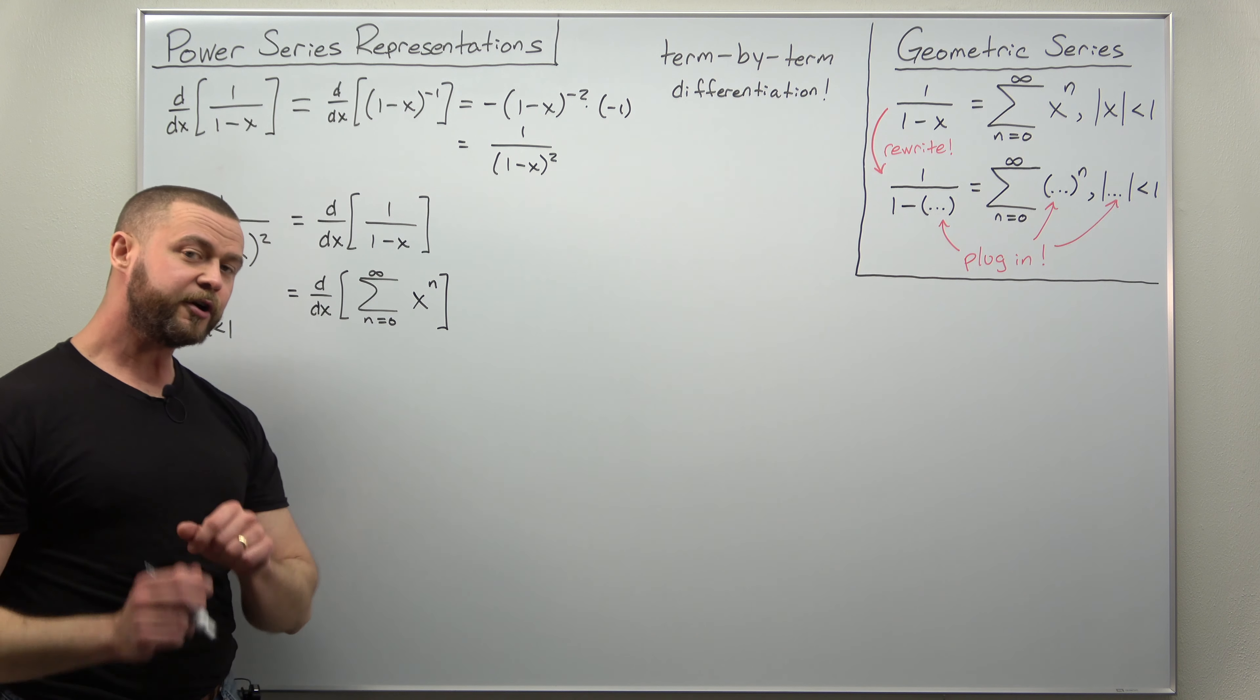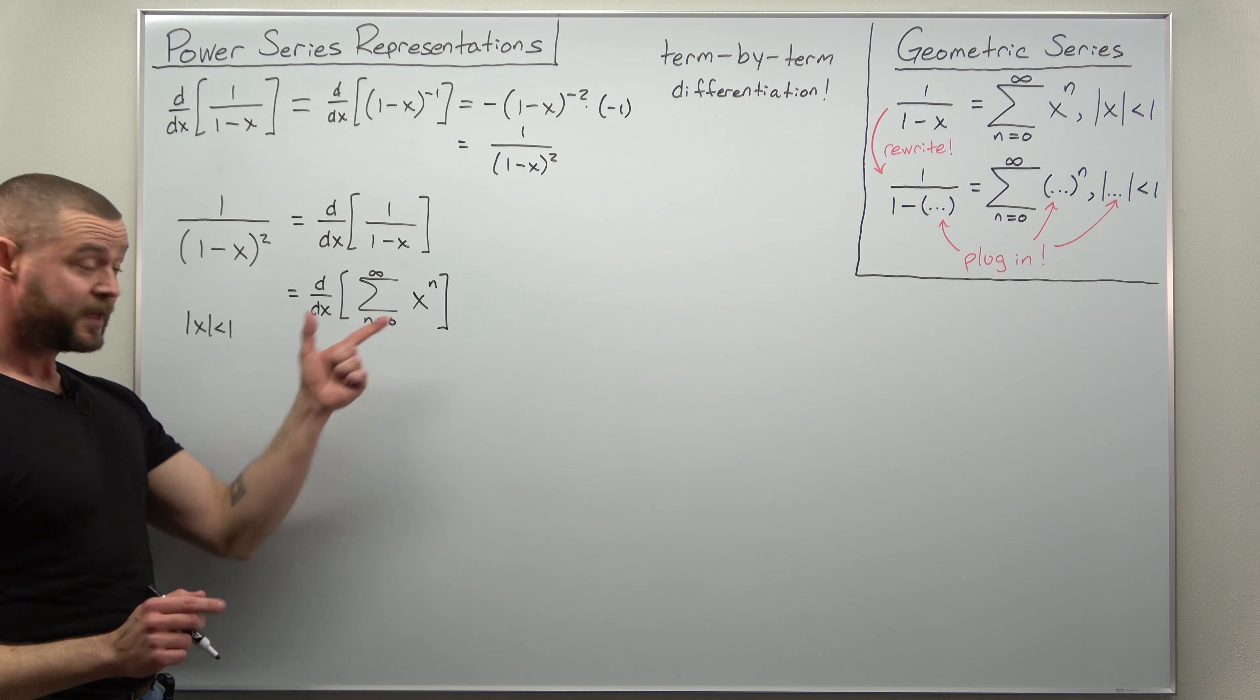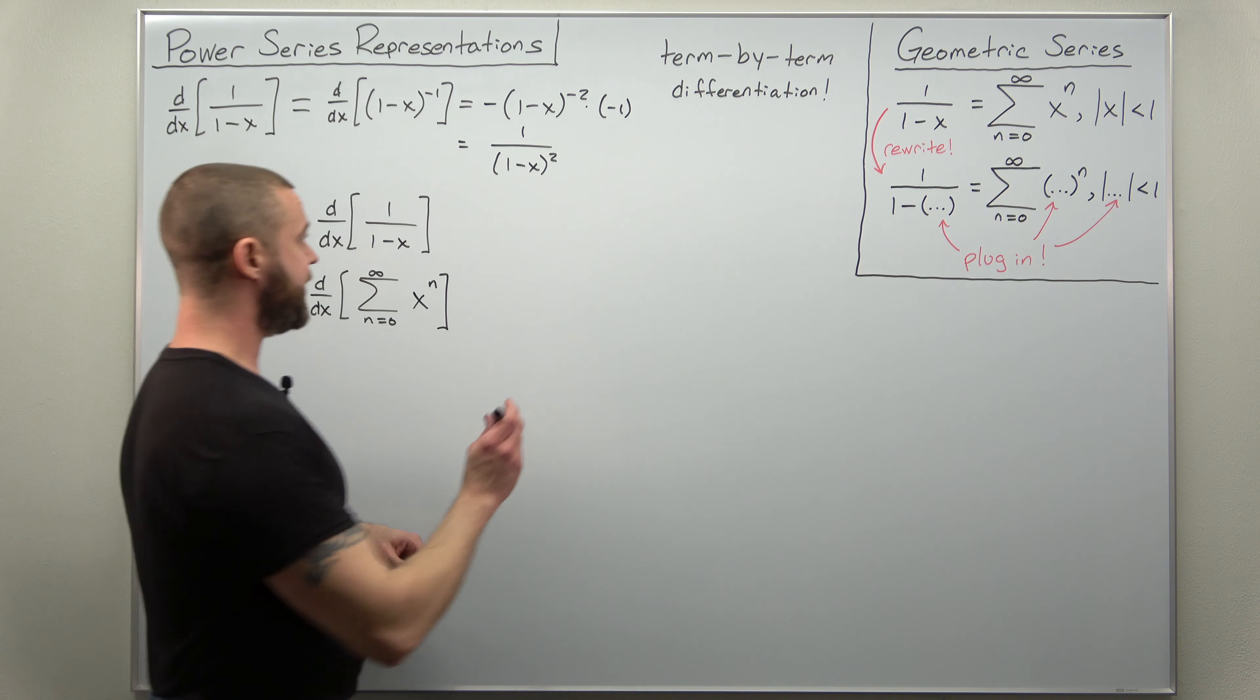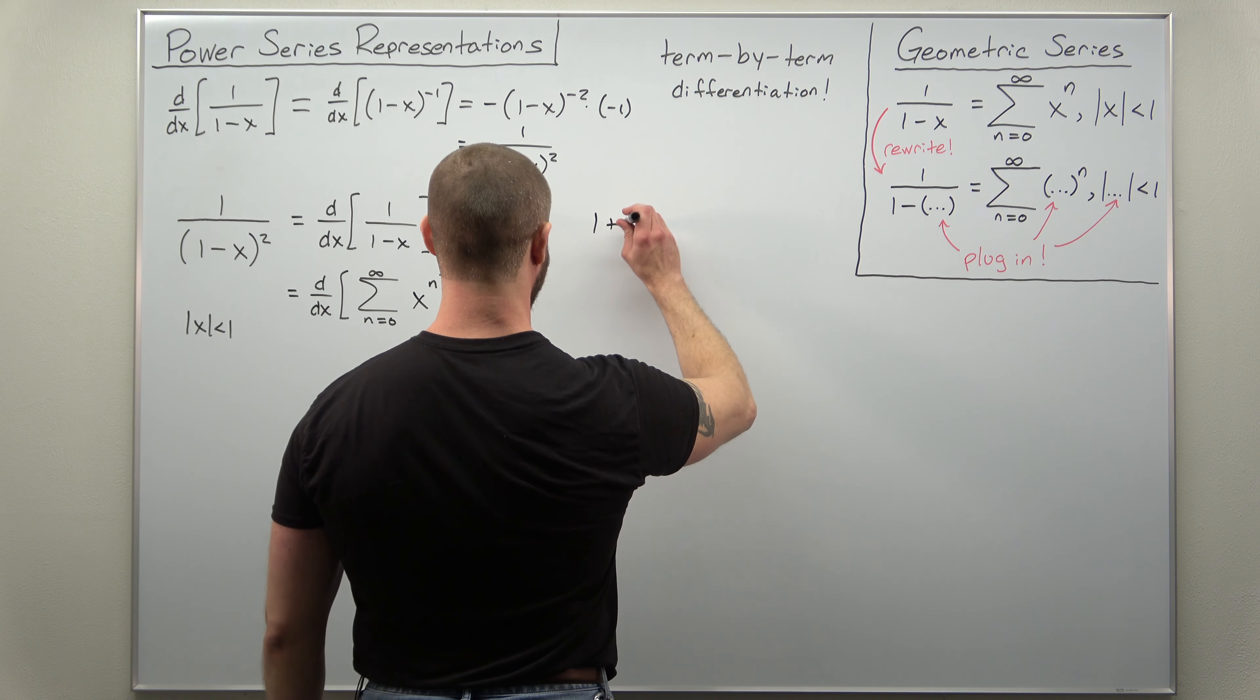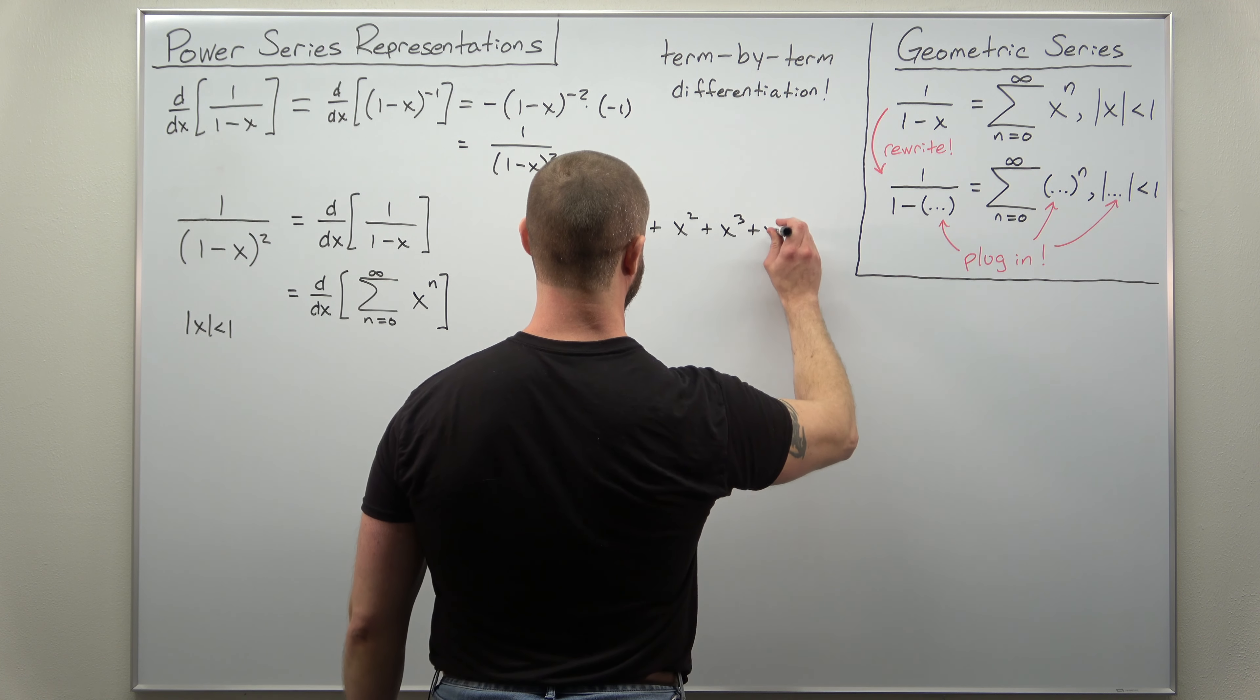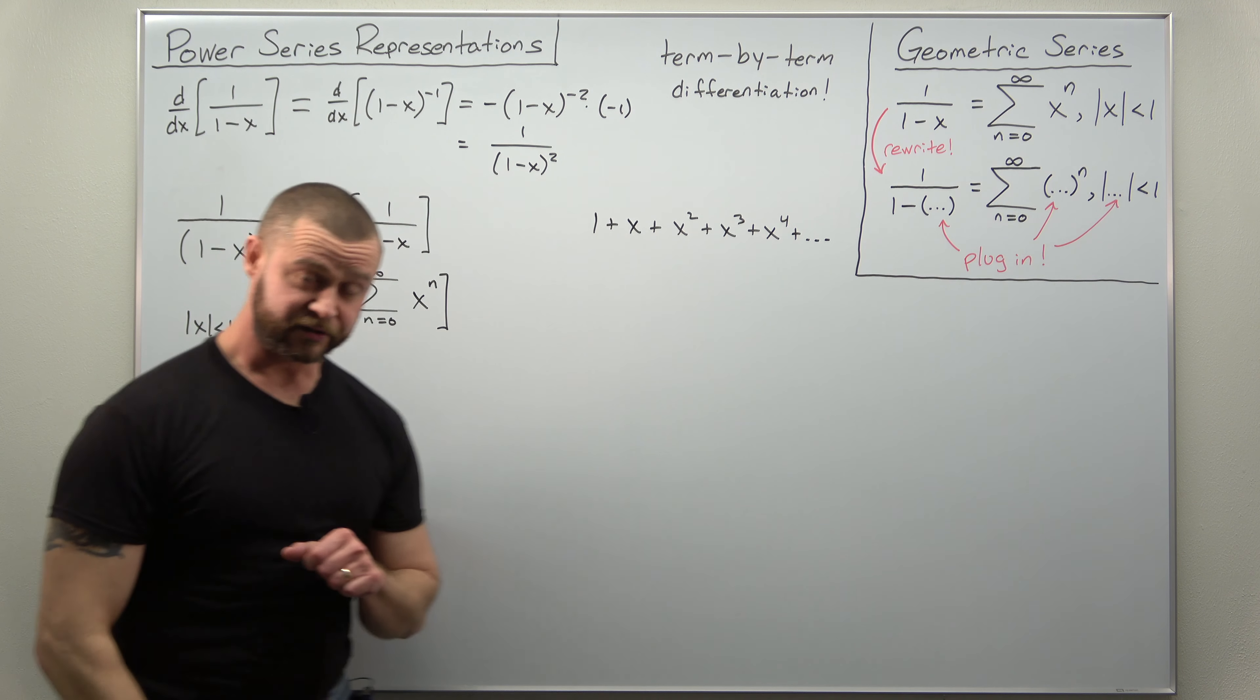Now where term-by-term differentiation comes in is this is really an infinite sum of powers of x. Let me go ahead and write out those powers of x. So start off with n equals 0 to give 1, plus x, plus x squared, plus x cubed, plus x to the fourth, so on and so on.